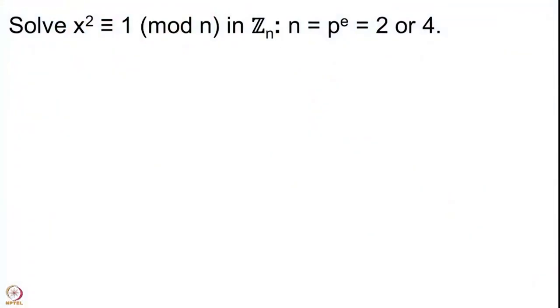To summarize: whenever p is an odd prime, in Z mod p^e·Z there are only two solutions to x² ≡ 1 (mod p^e), those being a ≡ 1 (mod p^e) and a ≡ −1 (mod p^e). For all odd primes the situation is the same. When we go to the even prime p = 2 the situation is somewhat different.